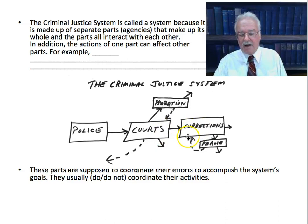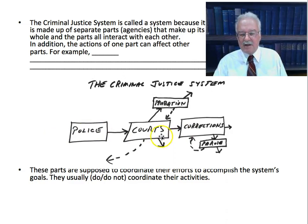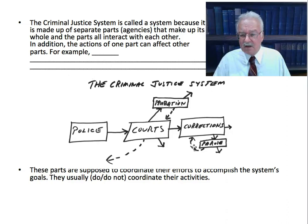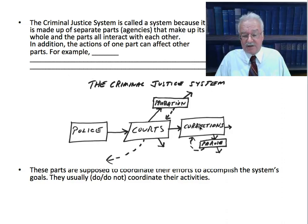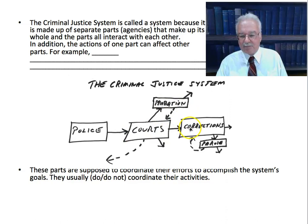If the probation department doesn't rehabilitate and supervise a probationer properly, that probationer will break the law and wind up back in the police system, going through the system again. These parts are supposed to work together for common goals: to punish the guilty, do some reform, and incapacitate dangerous people. Some repeat offenders and violent offenders with high risk of repeating are often given very long sentences so they stay incarcerated and can't harm people — that's called incapacitation. So those are the parts of the criminal justice system and how they're supposed to operate together.